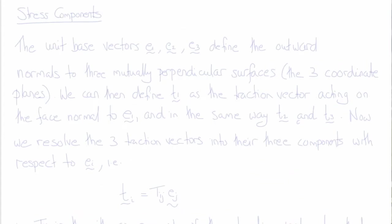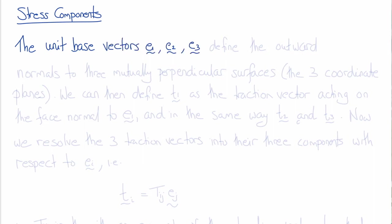Now let's consider the components of the stress tensor, which is defined by two vectors: the traction vector, which has units of force per unit area, and the unit normal vector, which is dimensionless but defines the orientation of a surface. If we have unit base vectors E1, E2, and E3 and use them to define the outward normals, they define three mutually perpendicular coordinate planes — the X1-X2 plane, the X2-X3 plane, and the X1-X3 plane.